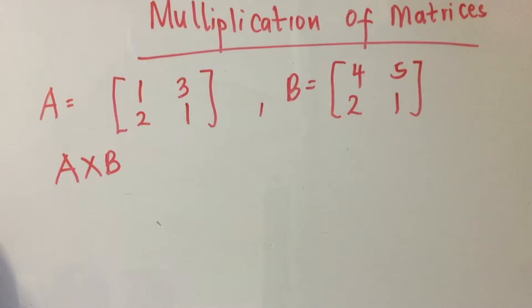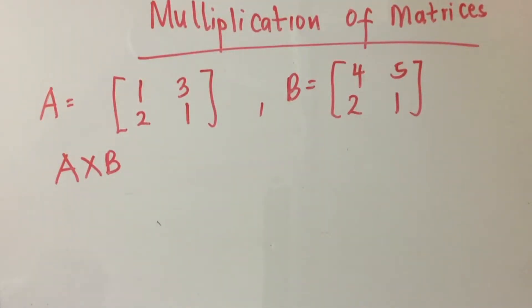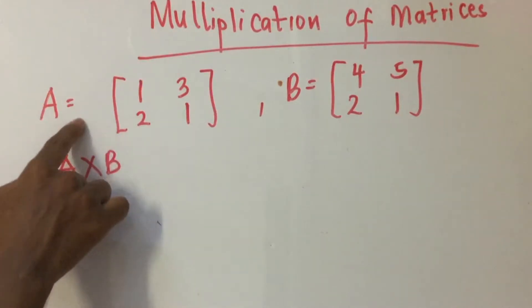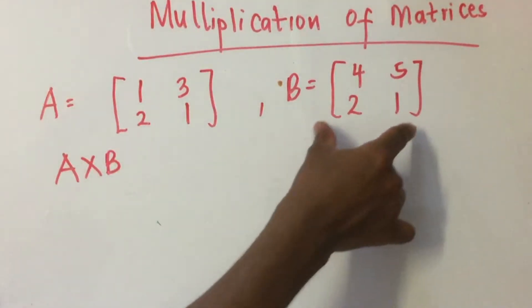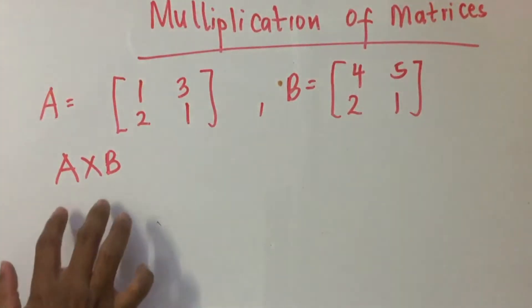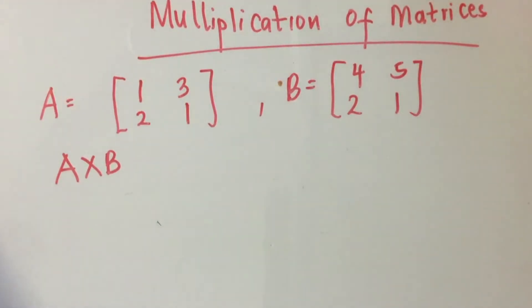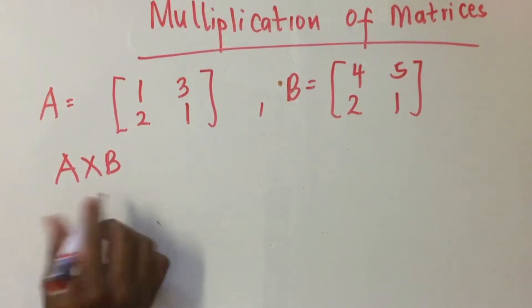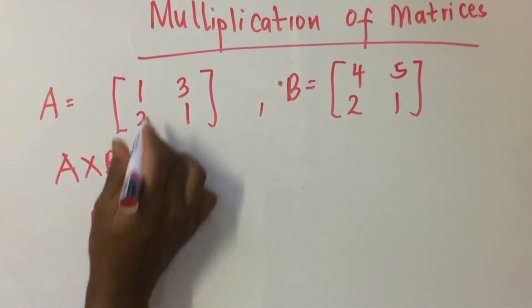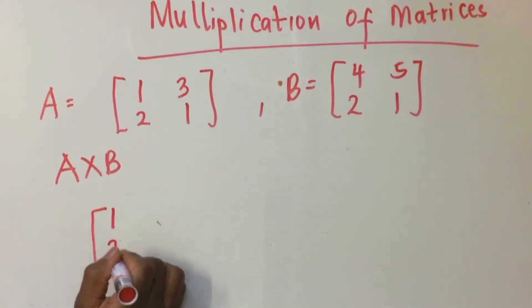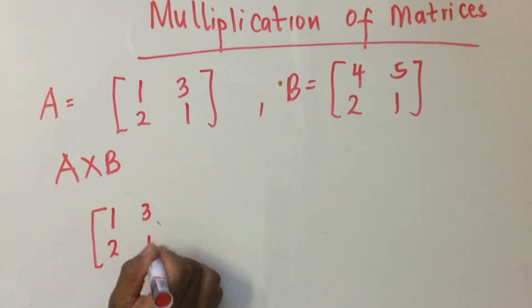This video is about multiplication of matrices. This is matrix A and B. Matrix A has values: 2, 3, 1.